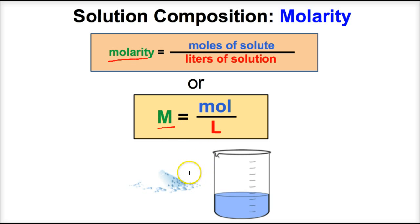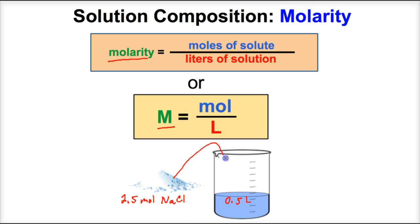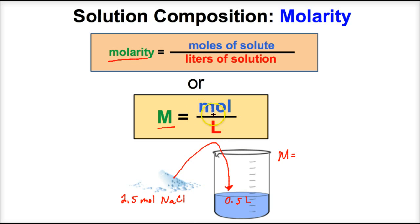Let's suppose we have a beaker and we want to make 0.5 liters of a salt water solution. We have some salt and we're going to add 2.5 moles of table salt to this beaker, stir it until it all dissolves, and make 0.5 liters of this salt water solution. If I then ask you to determine the molarity of this solution, how would we do that?